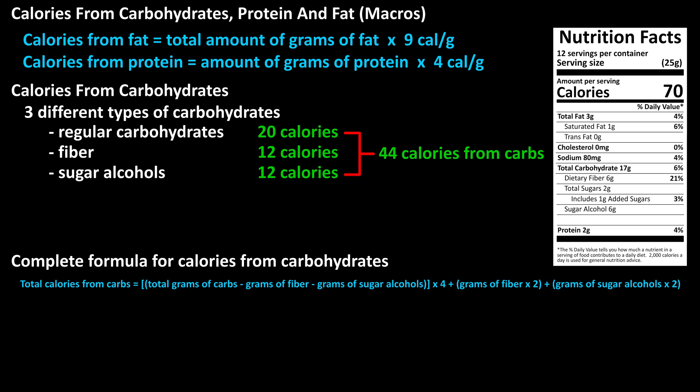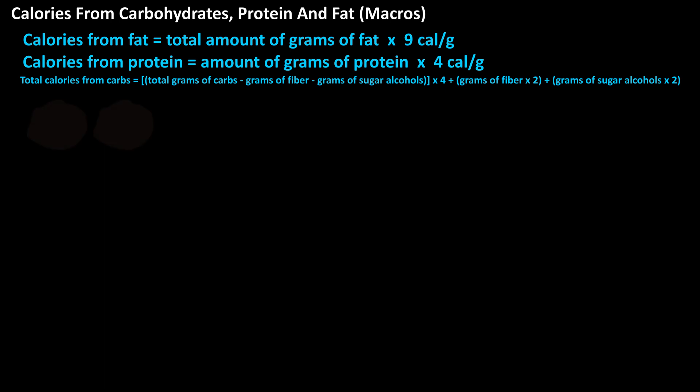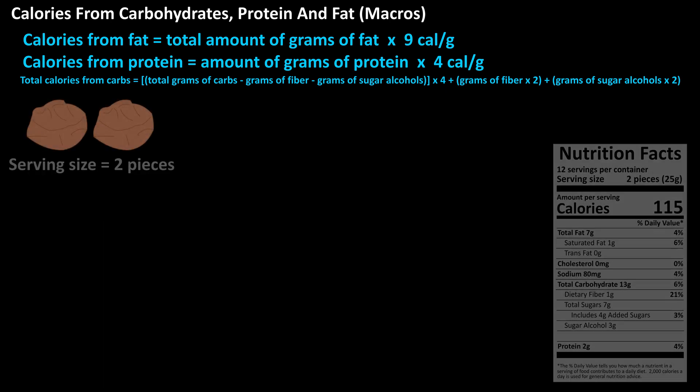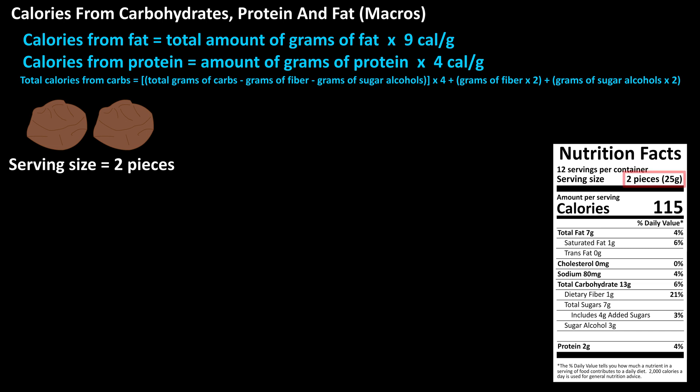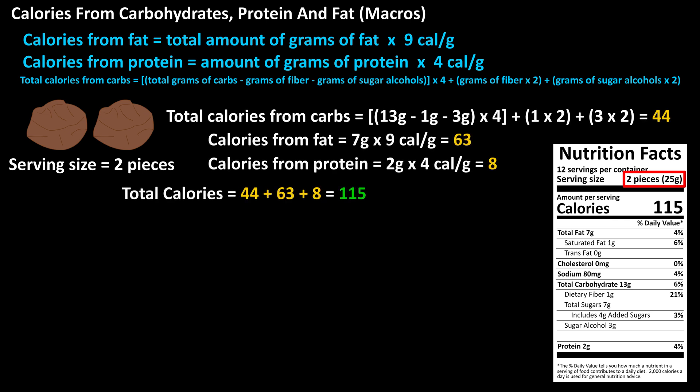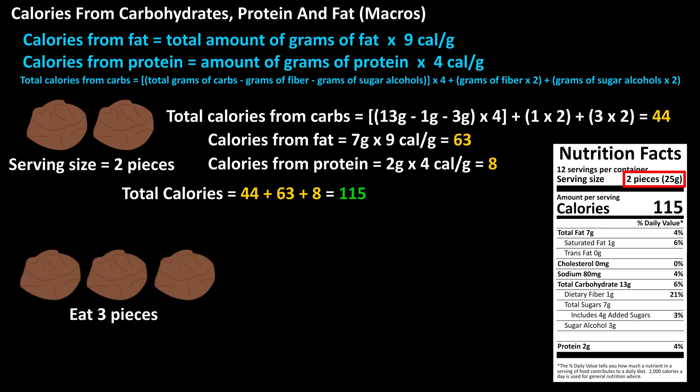One thing to keep in mind is that the data listed on the nutrition label is always for a serving size. For example, if you're going to eat some chocolate candies and the label lists the serving size at two pieces at 25 grams, with seven grams of fat, two grams of protein, and 13 grams of carbohydrates — with one gram of fiber and three grams of sugar alcohols for that serving size — the calculation for total calories and the breakdown from macronutrients equals 115 total calories. If you ate three pieces, you would have to adjust for that.